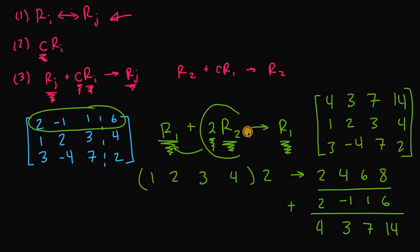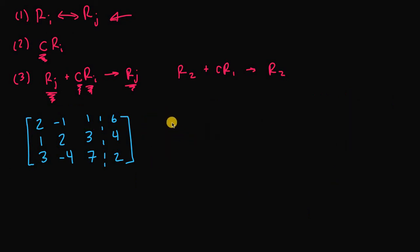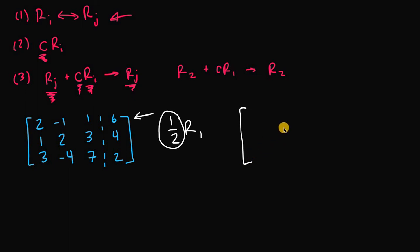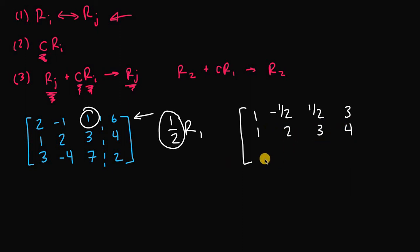Although we multiplied r2 by two, this was only temporary in order to get our new row one. Whenever we multiply a non-zero constant to a row and add it to another row, we're only changing the value of the target row. Now let's multiply row one by a non-zero constant one-half, dividing every element by two: 2÷2=1, -1÷2=-1/2, 1÷2=1/2, 6÷2=3.